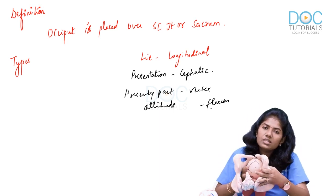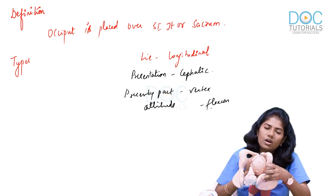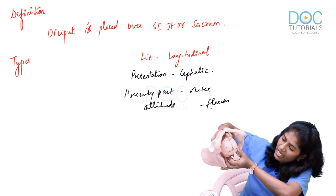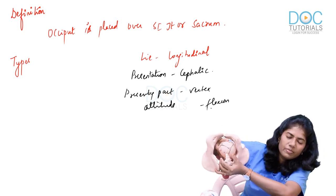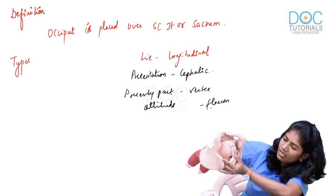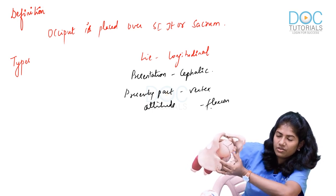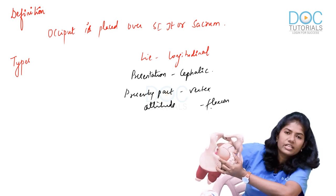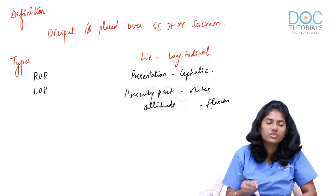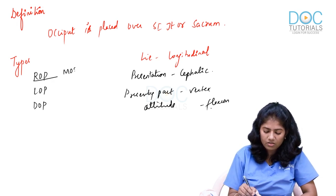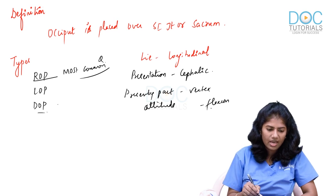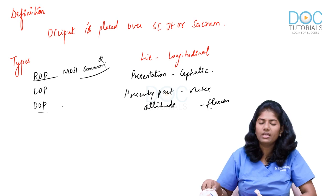Now we are going to deal with occipito-posterior position, where the occiput occupies any of the posterior quadrants. It can be direct posterior, left posterior (left sacroiliac joint), or right posterior (right sacroiliac joint). The most common type is right occipito-posterior — a very important MCQ point. Then comes left occipito-posterior, and then direct occipito-posterior.